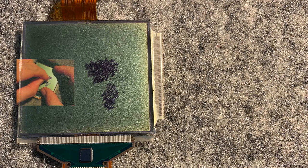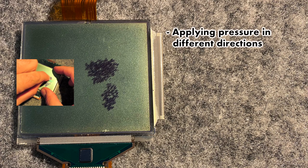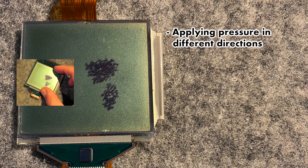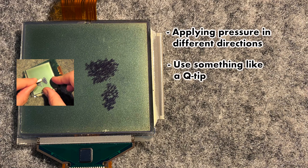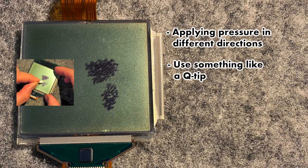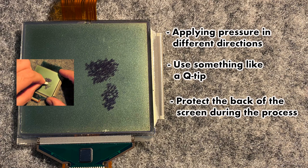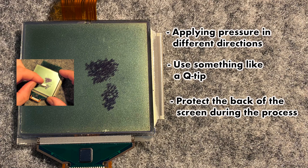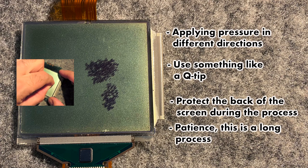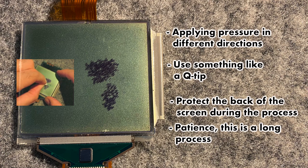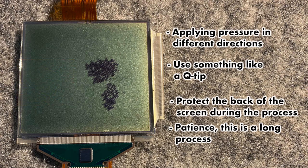Okay, so the takeaways from this is applying pressure in different directions to try to spread the pixels out. Use something soft and sturdy like a Q-tip or a pen with felt on the end or be creative. Adding a felt backing or something in the back to protect the back of the screen. And patience. This takes a long time. Three or four hours, maybe more. Just take your time and you'll definitely see some results.